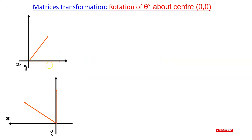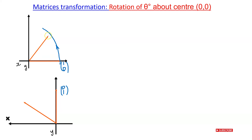To find the transformation matrix we need to consider two unit vectors: one horizontal vector (1, 0) and the other vector (0, 1). We then rotate the two vectors by theta degrees anti-clockwise. Anti-clockwise is a positive movement.